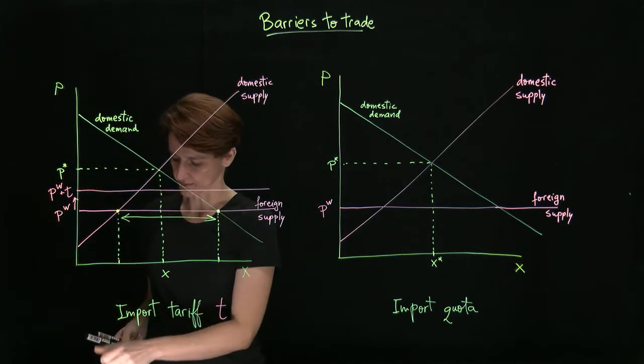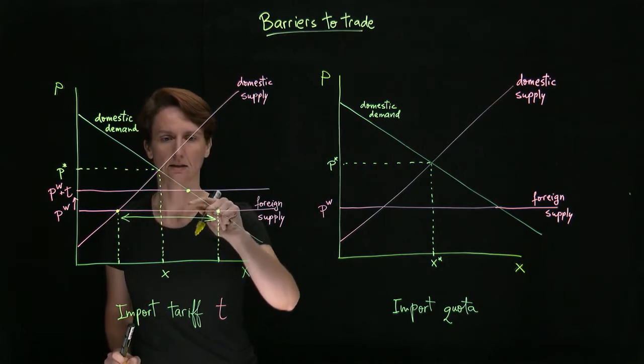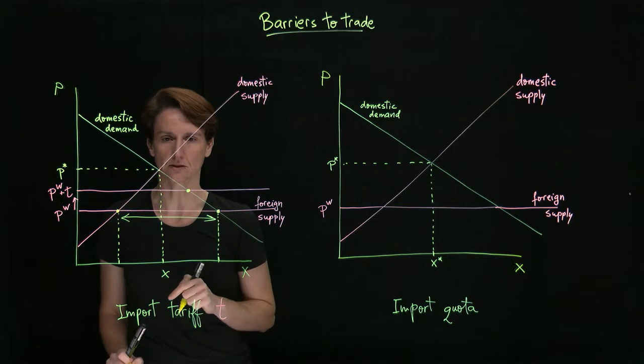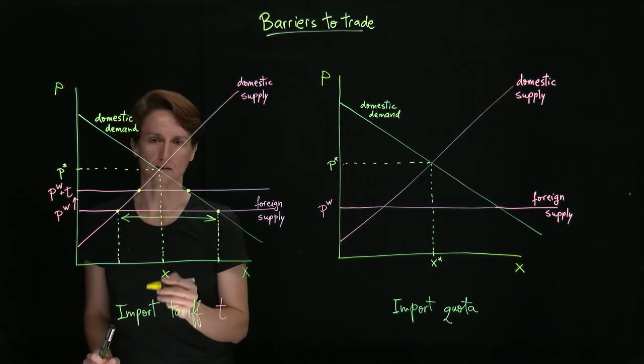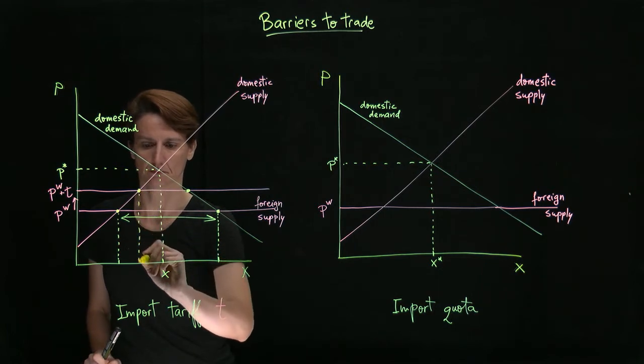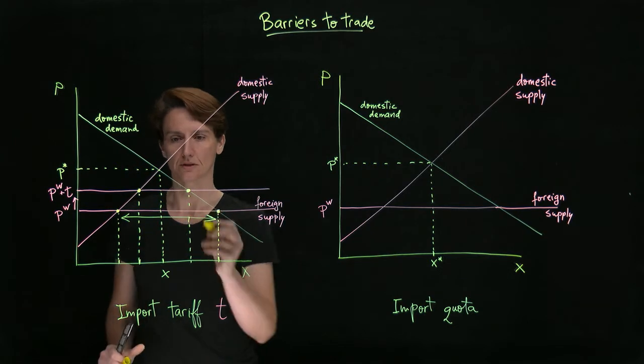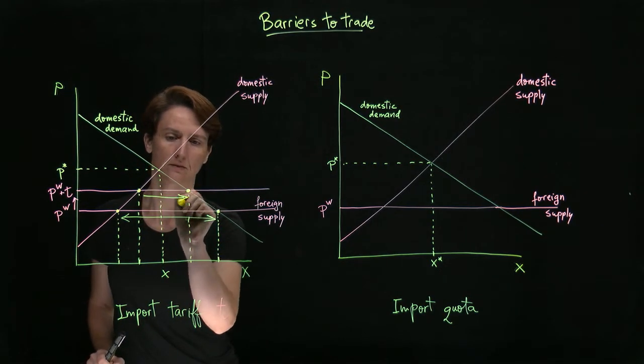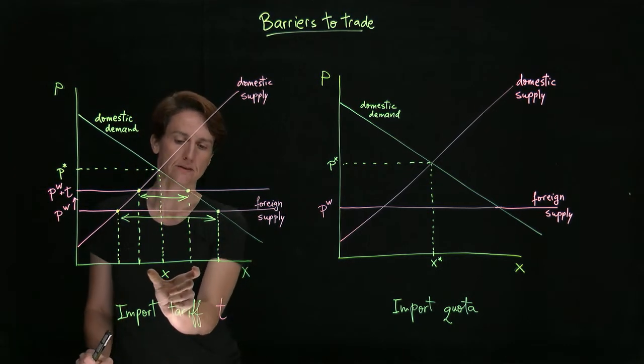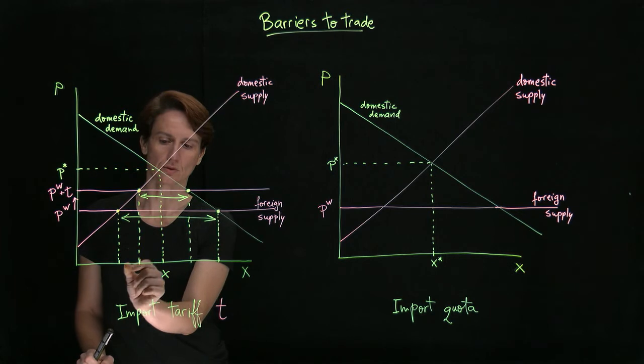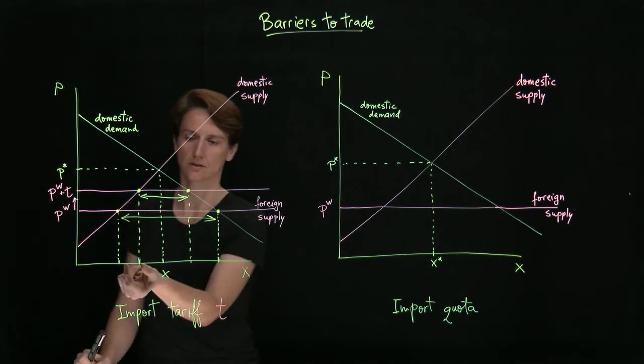What effect will that have? Well, consumers will be able to purchase less and they'll have to pay a higher price for it. However, more of that will be bought from domestic producers. So now the amount of imports is smaller. So the tariff does achieve the goal of reducing imports and increasing how much domestic producers sell.